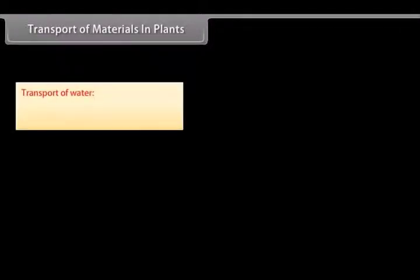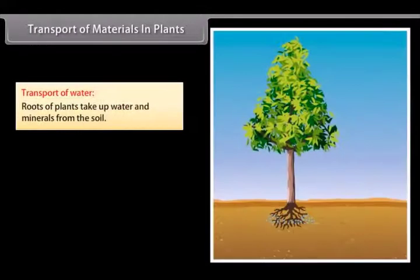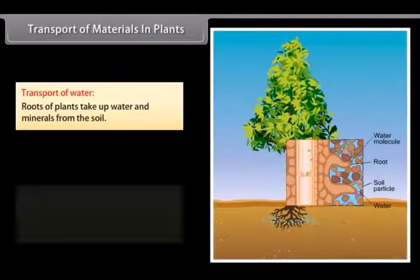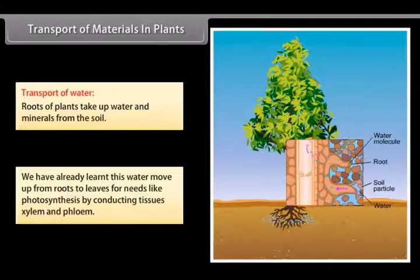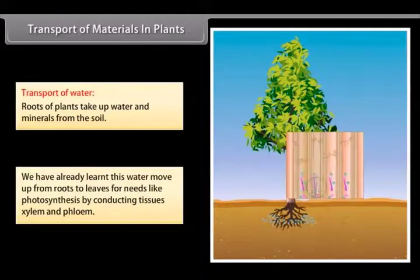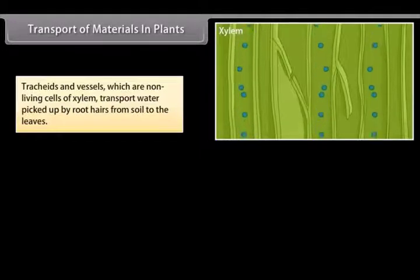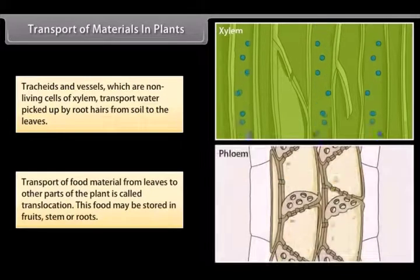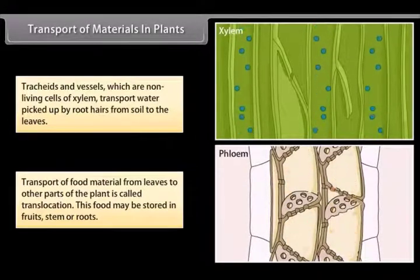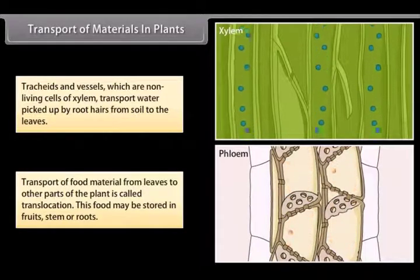Transport of materials in plants: Roots take up water and minerals from the soil. This water moves up from roots to leaves for photosynthesis through conducting tissues, xylem and phloem. Tracheids and vessels, which are non-living cells of the xylem, transport water picked up by root hairs from soil to the leaves. Transport of food material from leaves to other parts of the plant is called translocation; this food may be stored in fruits, stem or roots.